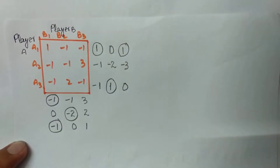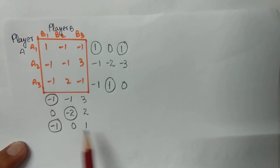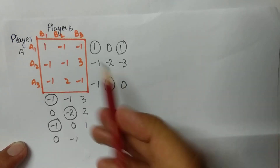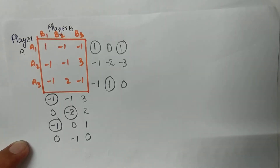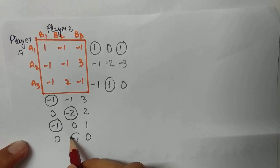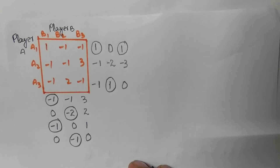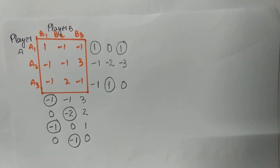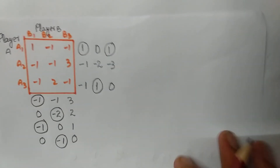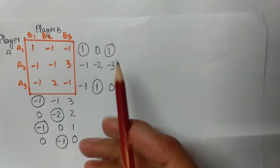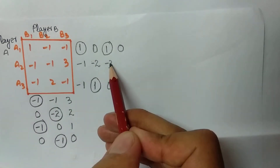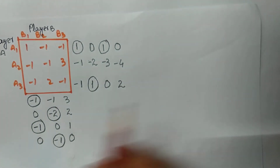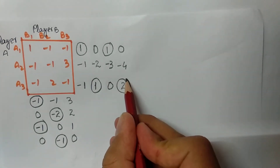Player A picks the first row and adds: giving minus one, then zero. Encircle the smallest number, which is minus one. Remember we need at least 10 iterations — we have completed four so far, six more to go. Corresponding to minus one, we select that column and add: −1 + 1 = 0, −1 + (−3) = −4, and 2 + 0 = 2. Encircle the largest element.